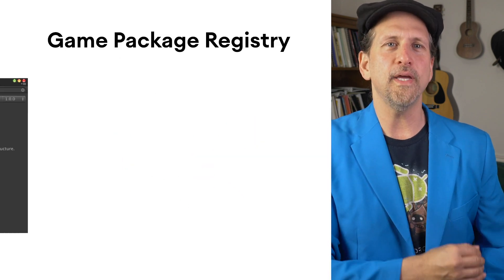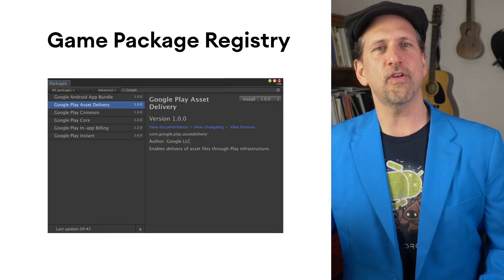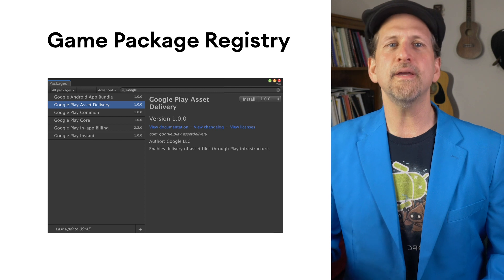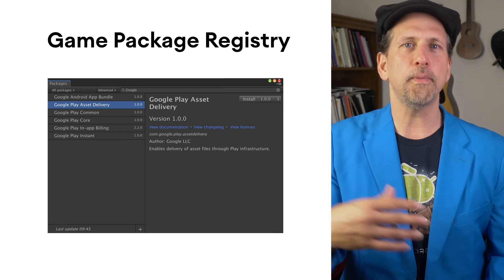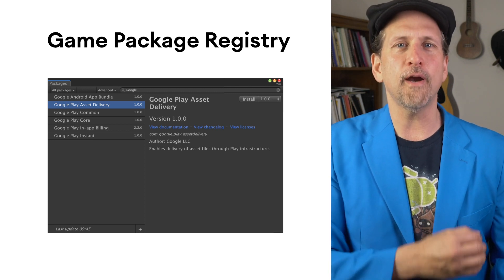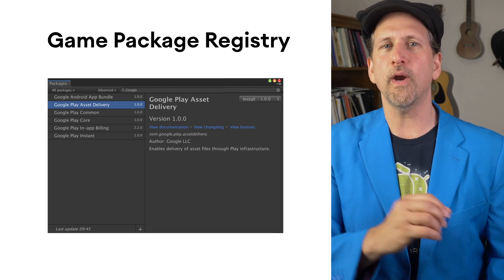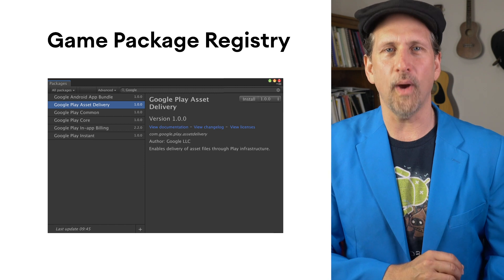Finally, we announced the Game Package Registry for Unity, giving you access to Google Play Billing, Android App Bundles, Play Asset Delivery, Play Instant, and Firebase for Games all in one place, with more API support on the way.